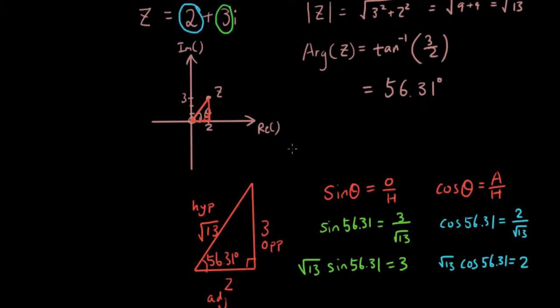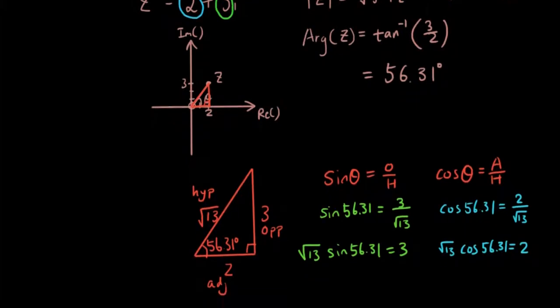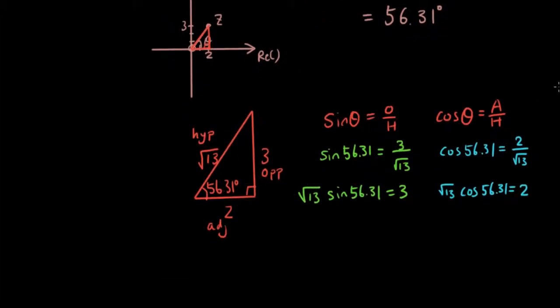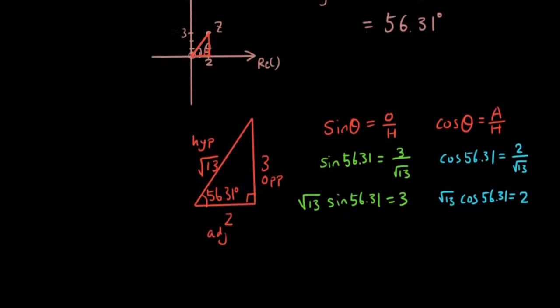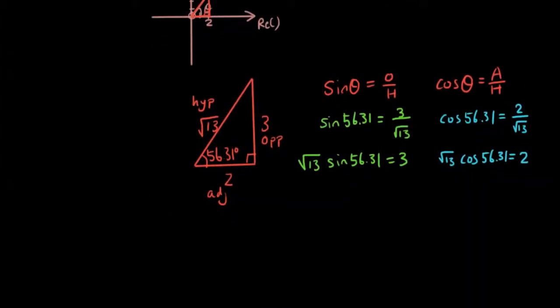So what I'm going to do is now substitute the expression I have for 3 into where 3 is in the standard form, and I'm going to substitute the expression for 2 into the standard form as well. So I get z equals, let me write this out again, z equals 2 plus 3i. That's the standard form.